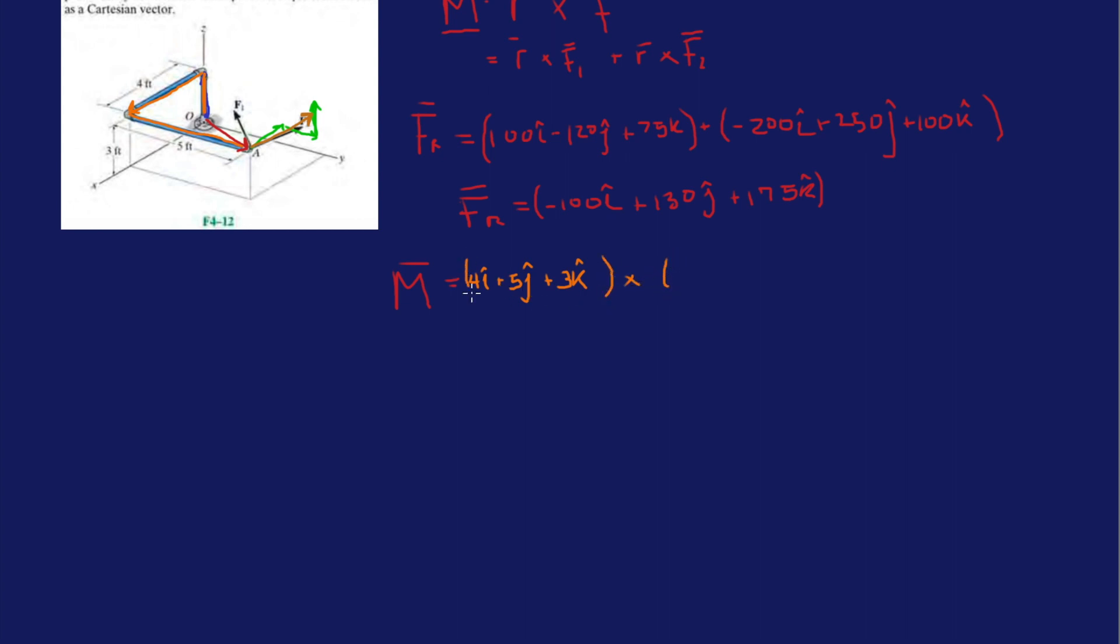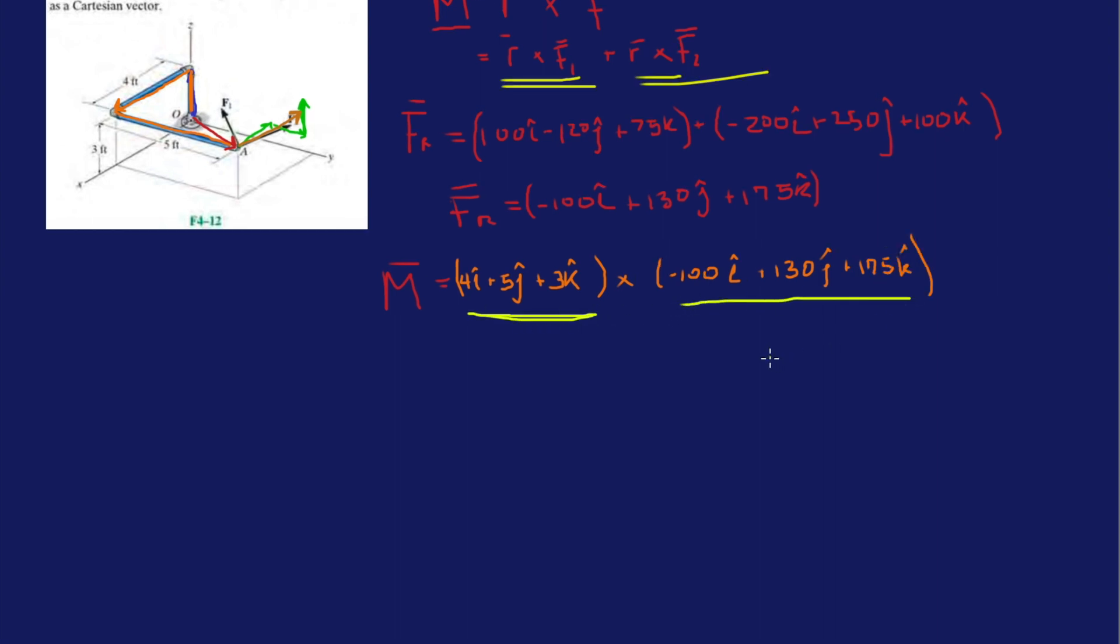Now cross it with the force: minus 100I plus 130J plus 175K. We have all the components filled up. So we're gonna do IJK, and then 4, 5, and 3, minus 100, 130, and then 175.